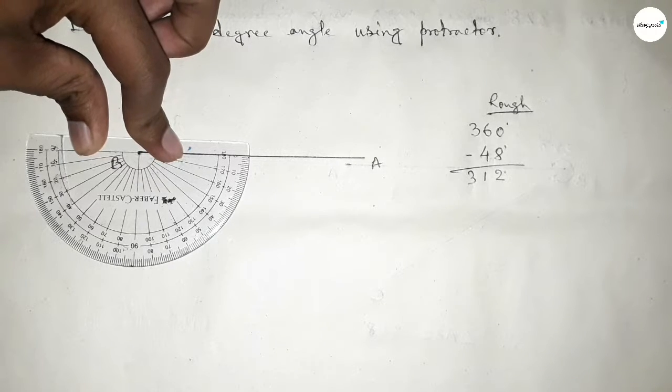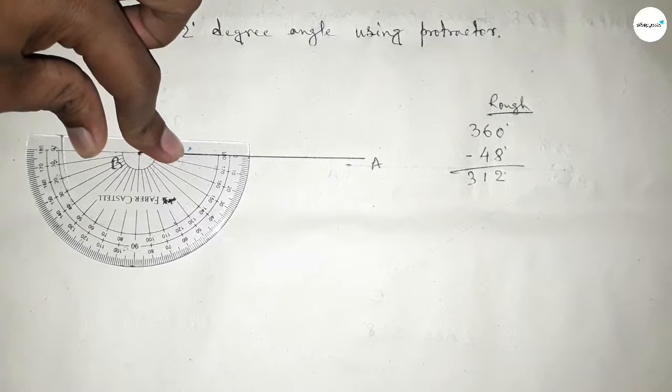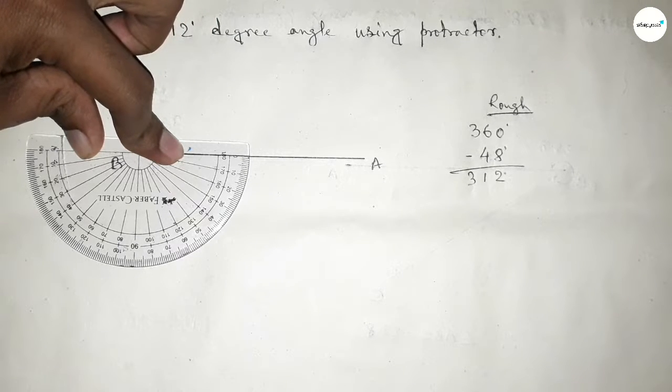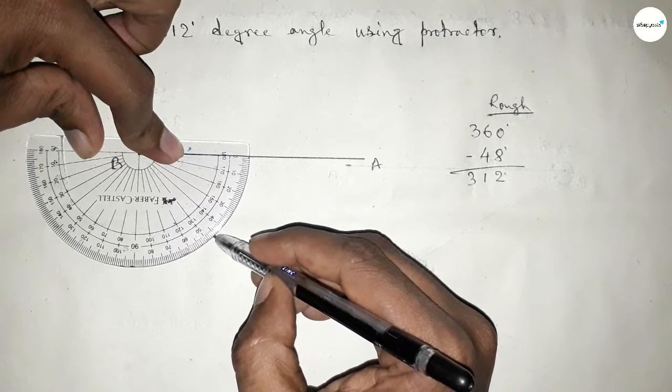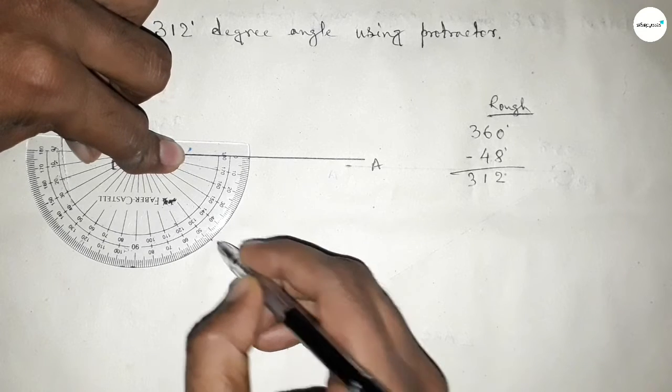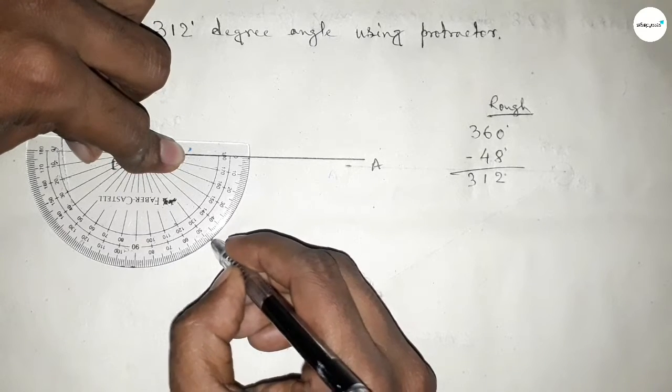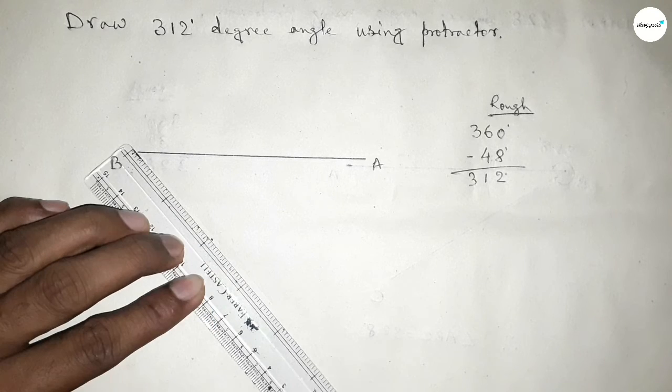Okay, putting from this, total 360 degree angle. Now counting 48 degrees. So this is 10, 20, 30, 40, 45, 46, 47, 48. So this is 48 degree angle.